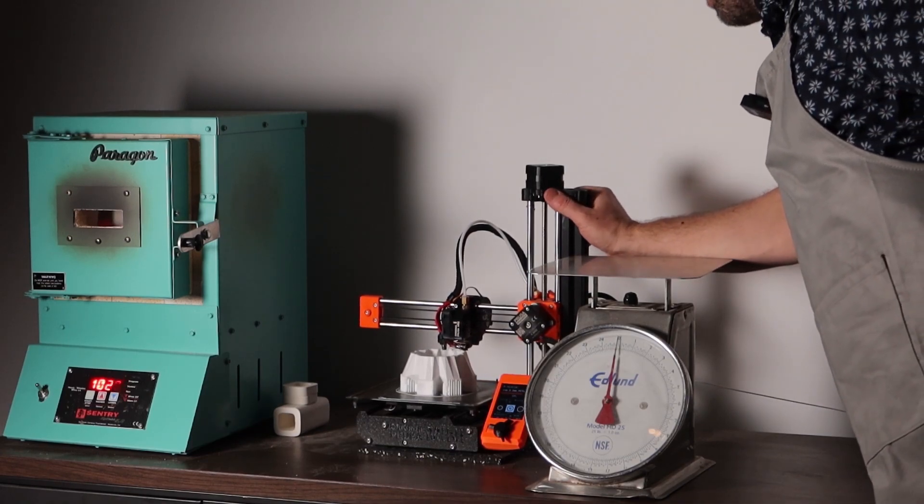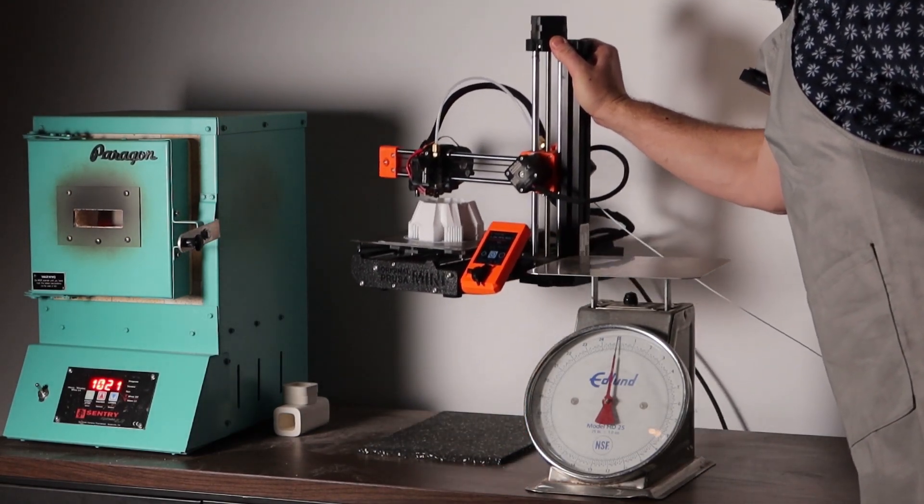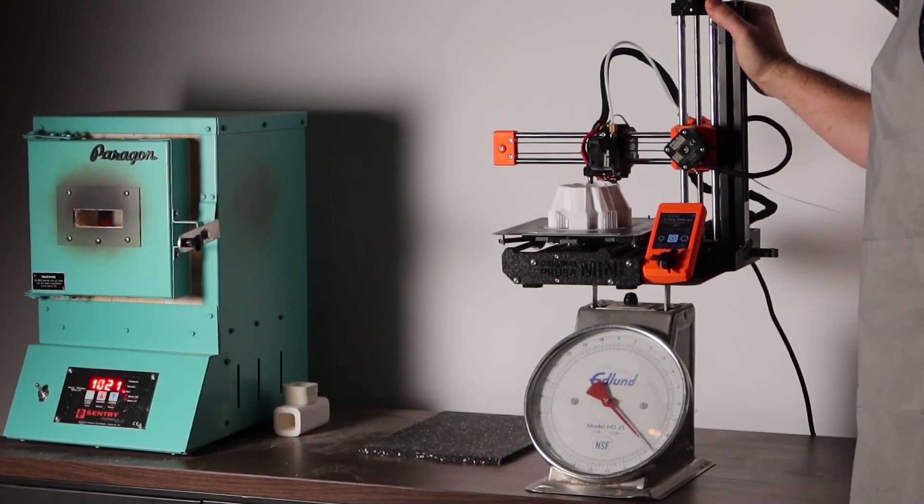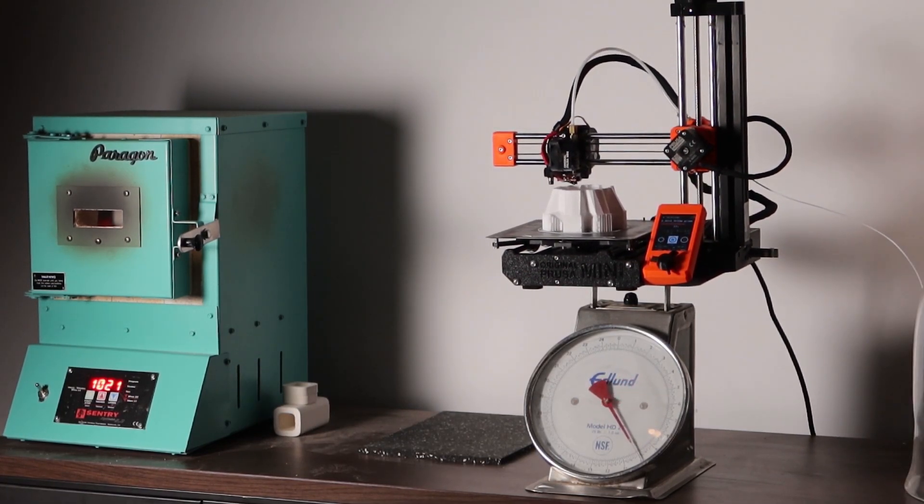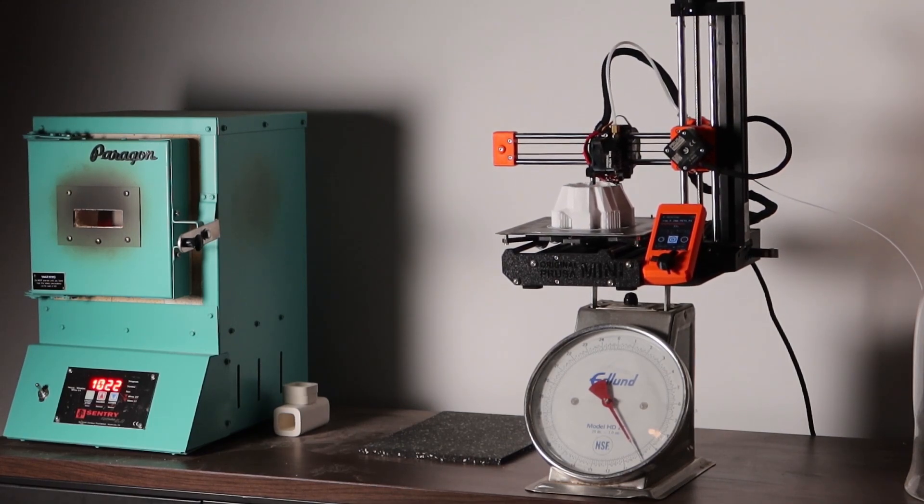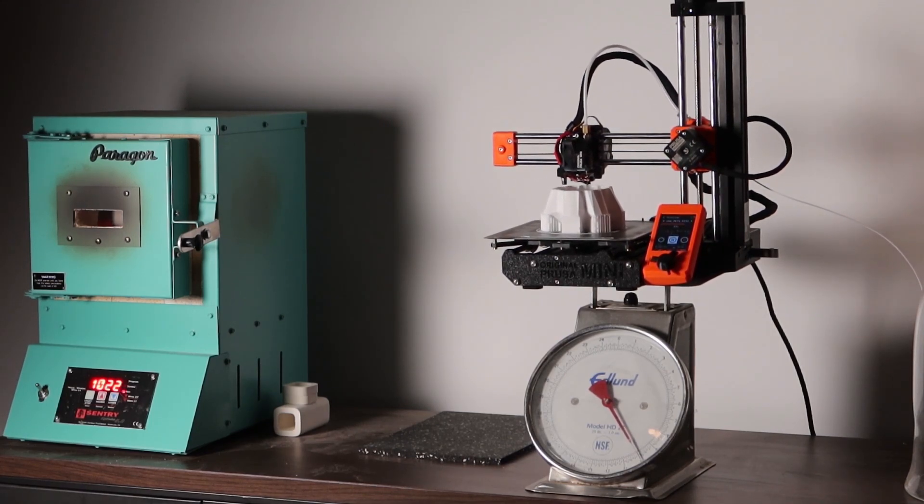As a comparison, this little Prusa Mini printer, the entire printer weighs just 10 pounds. So one extruder on the clay printer that I have designed is significantly heavier than this entire Prusa Mini.